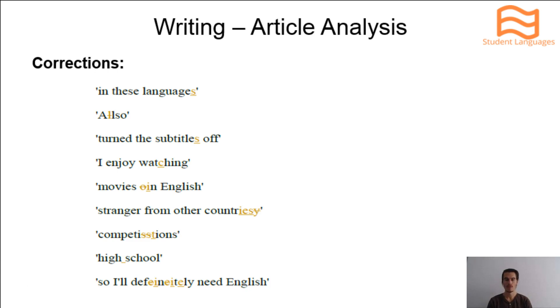The word also is not spelt correctly. Also should be spelt with one L. The third one, we need to say subtitles plural, not just one, but many subtitles. Watching is spelt incorrectly in the fourth one. In the fifth one, we say movies in English. It's the wrong preposition, we need to say in, not on. Stranger from other countries should actually be strangers from other countries. Plural and plural. Competitions is spelt wrong. It should be spelt with a T instead of two S's. T-I-T-I-O-N-S.